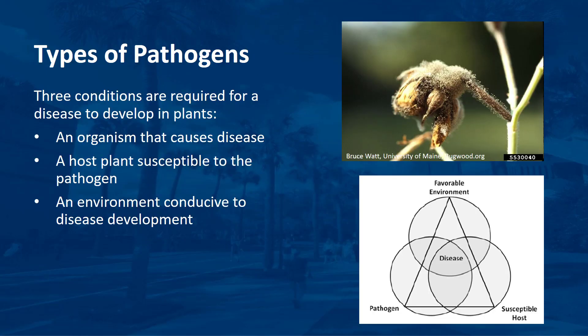To diagnose plant diseases effectively, it is necessary to understand the biology of the microorganisms that cause them—fungi, bacteria, and viruses. Three conditions are required for a disease to develop in plants: an organism that causes disease, a host plant susceptible to the pathogen, and an environment conducive to disease development, such as a particular temperature, wet plant surface,